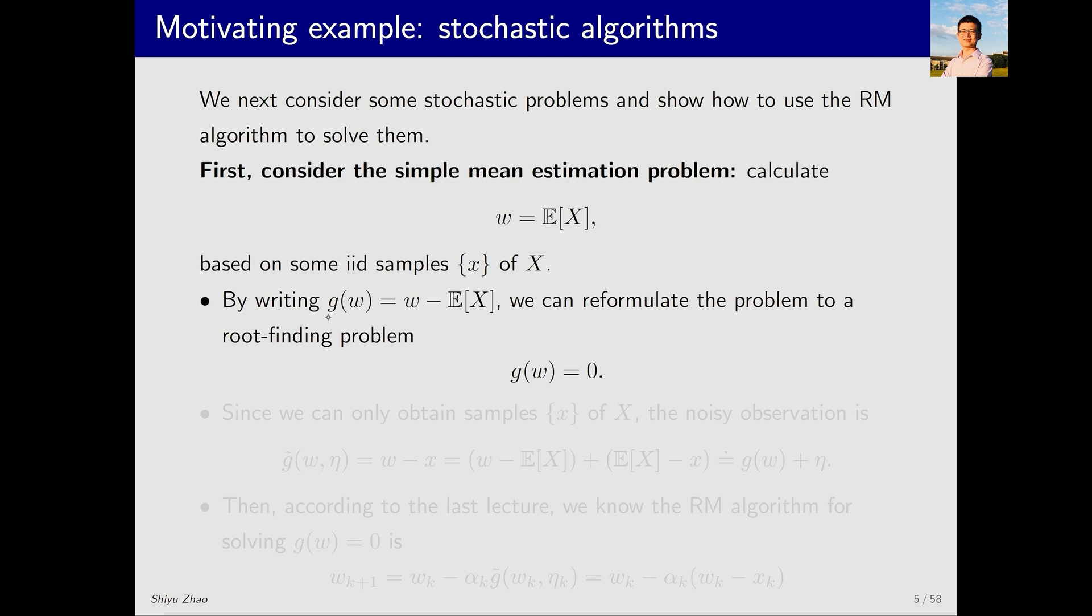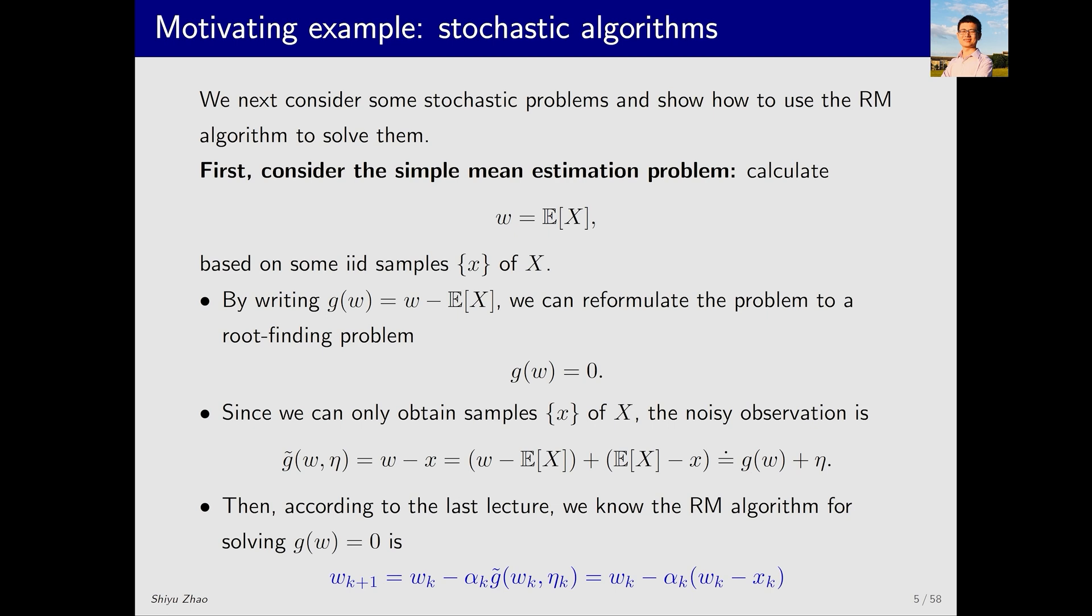Let me quickly go through this example. What is it about? I need to solve w. First, I write it as a function g(w), where g(w) equals w minus E[x]. Then, I solve this equation. Solving this equation naturally gives me the solution w star, which is E[x]. Now, I know x. Adding w to it, I get w minus x, which is essentially a measurement of g. Then, subtracting and adding E[x], I can write it as g(w) plus an error. According to the RM algorithm from the last lecture, I can write w_{k+1} equals w_k minus alpha_k g tilde. Substituting g tilde, we get w_{k+1} equals w_k minus alpha_k times (w_k minus x_k). This is the mean estimation algorithm we saw in the last lecture.